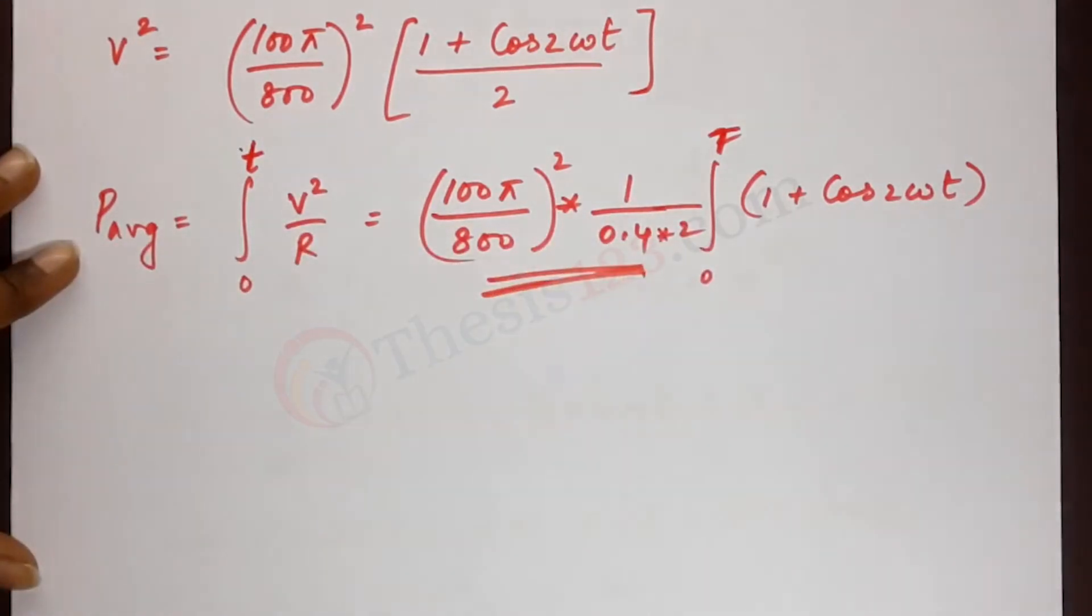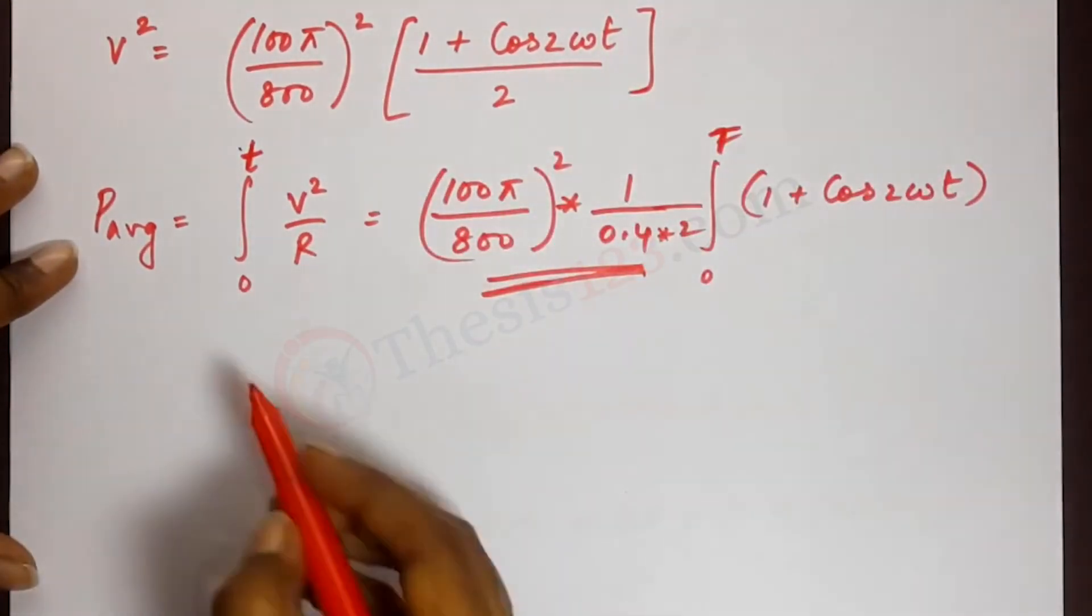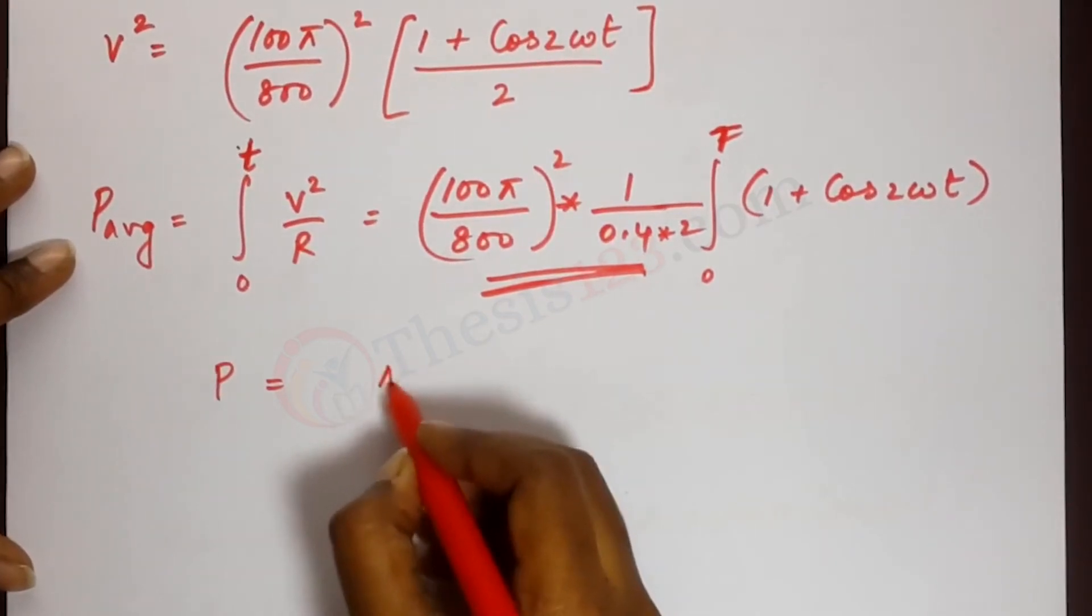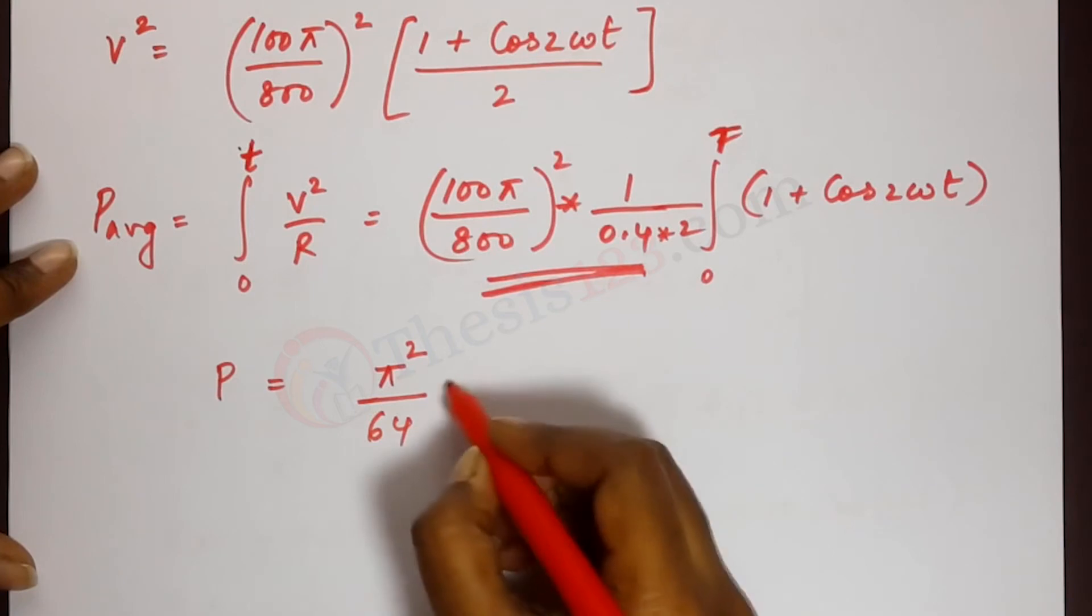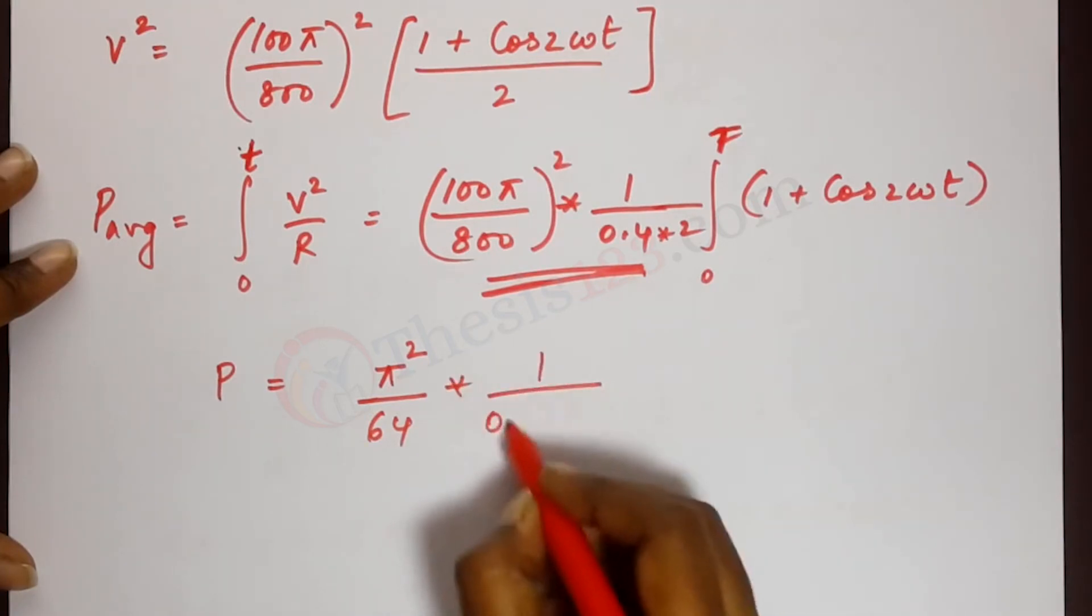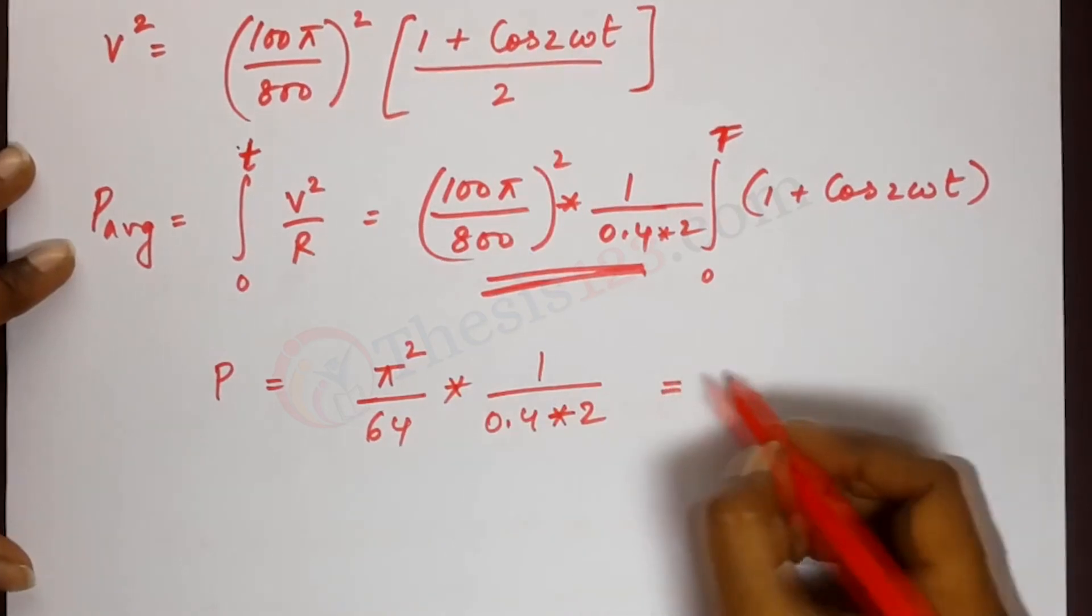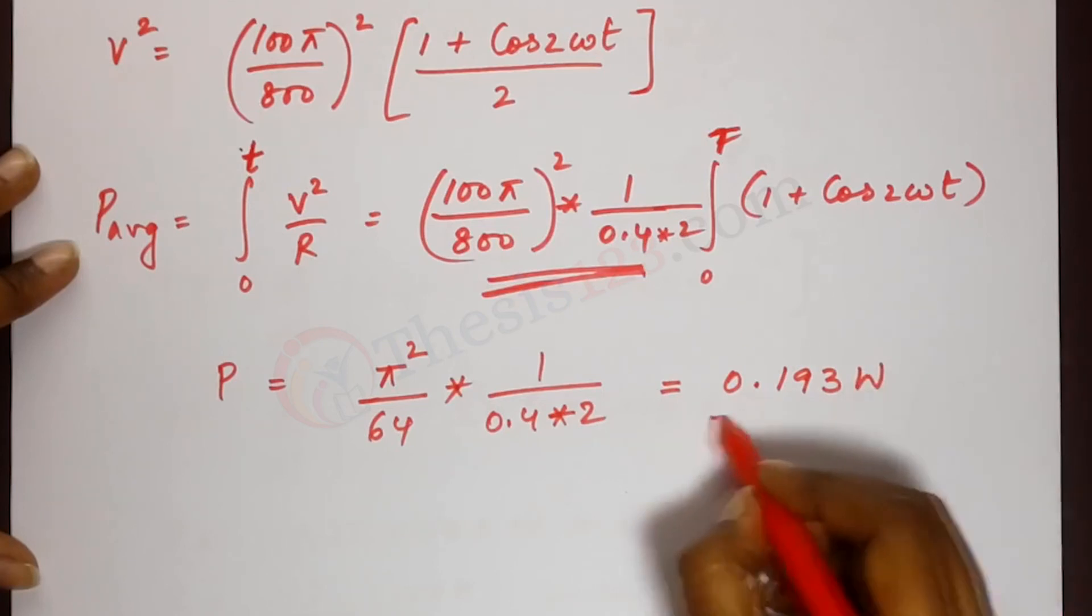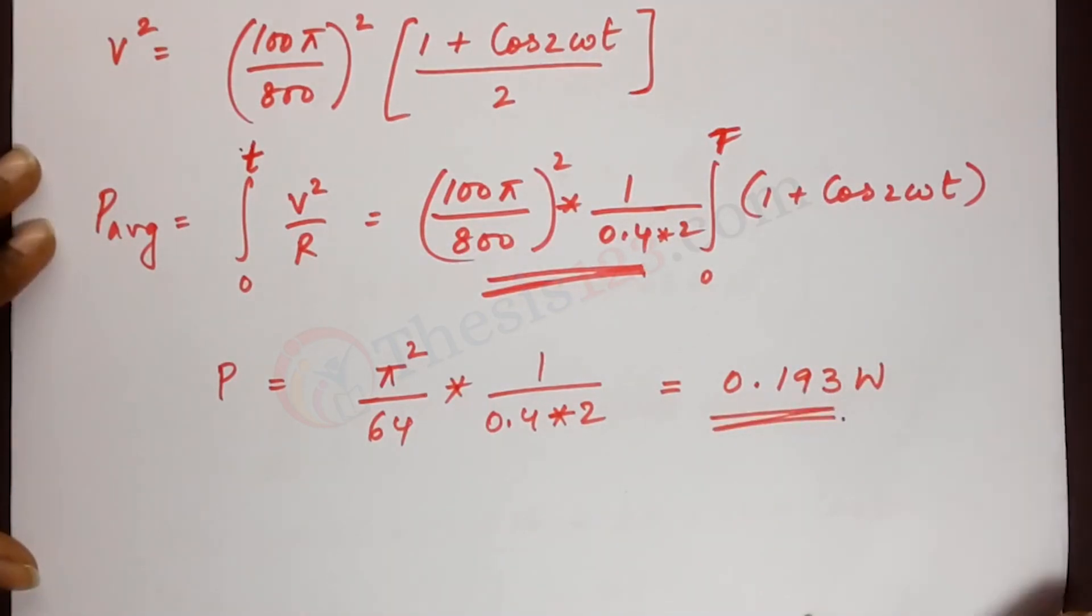So to find the power average, we work on the constants alone. We ignore this, we work on the constants alone. So the power now is pi square by 64 into 1 divided by 0.4 into 2 which gives us a value of 0.193 watts. So this is the final answer here.